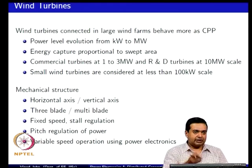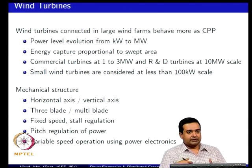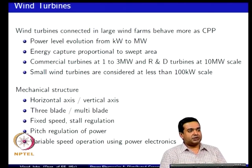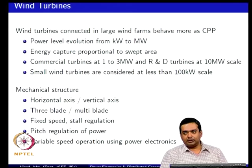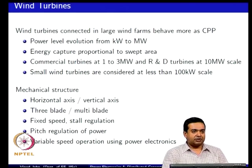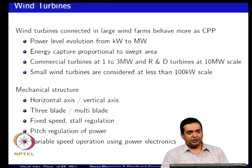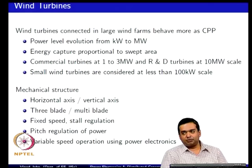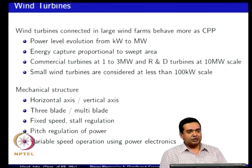Another blade option is pitch regulation, where instead of keeping the blade at a fixed position and designing it to stall, you physically change the pitch angle of the blade. If there is excessive power, you increase the pitch angle so the wind turbine does not capture it. More recently, people have looked at variable speed operation — the current state of the art — where you operate at a speed that gives the best energy capture. At low wind speeds you capture the best possible energy, and at high wind speeds you pitch out the blades to reduce the power captured.